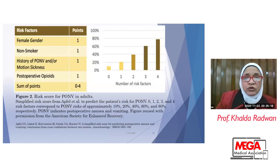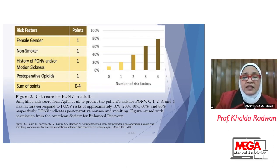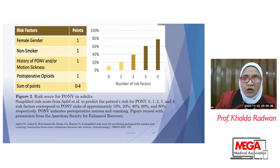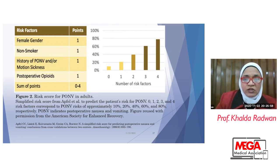The Apfel et al. score considers four major categories of risk factors: female gender, non-smoker, history of PONV, and postoperative opioid use. With no risk factors, incidence is about 10%. With one risk factor, 20%. With two risk factors, about 40%. With three, 60%, and with four, 80%. The more risk factors present, the higher the incidence of PONV, and we must intervene more aggressively in management.